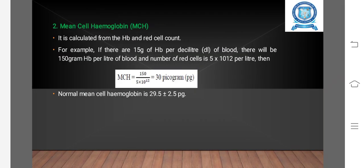Mean Cell Hemoglobin (MCH): It is calculated from the Hb and red cell count. For example, if there are 15 grams of Hb per deciliter of blood, there will be 150 grams Hb per liter of blood. Number of red cells is 5 x 10^12 per liter.